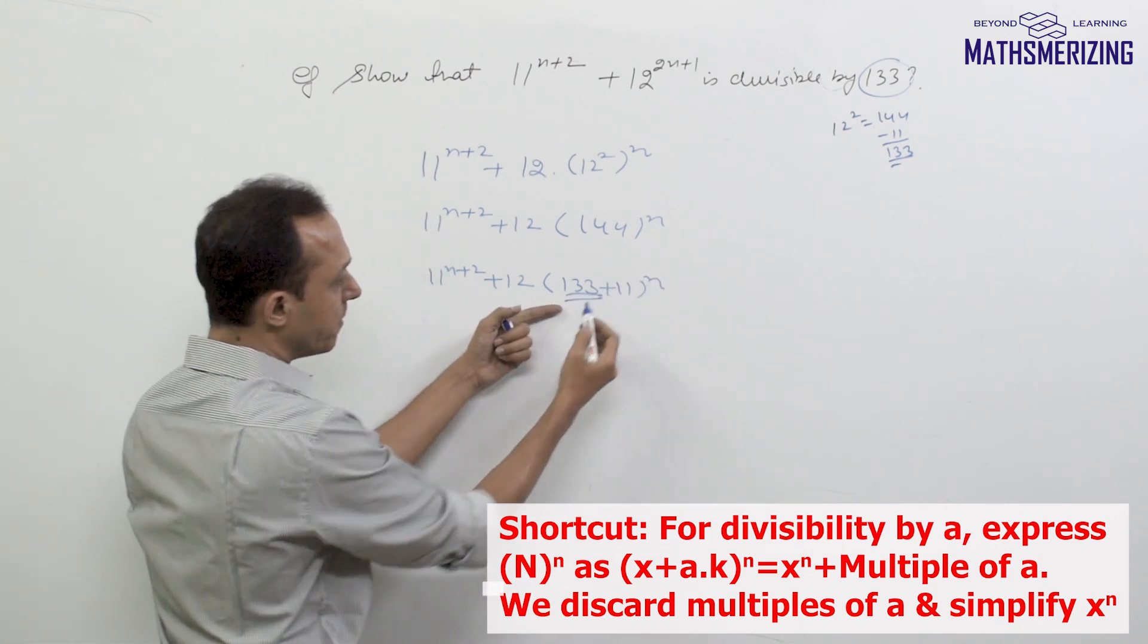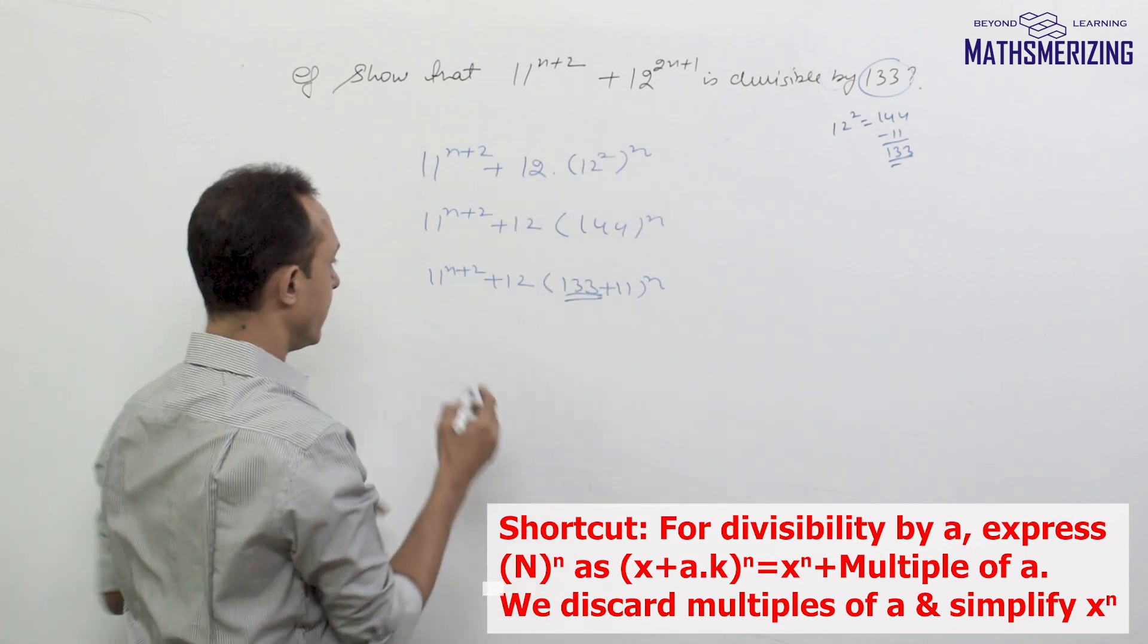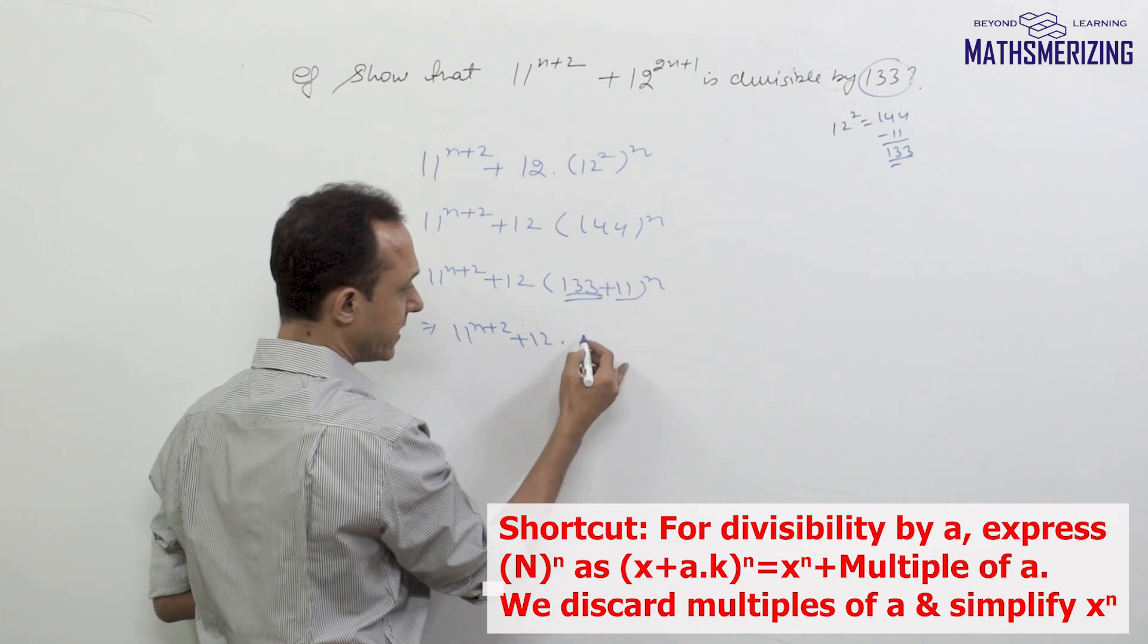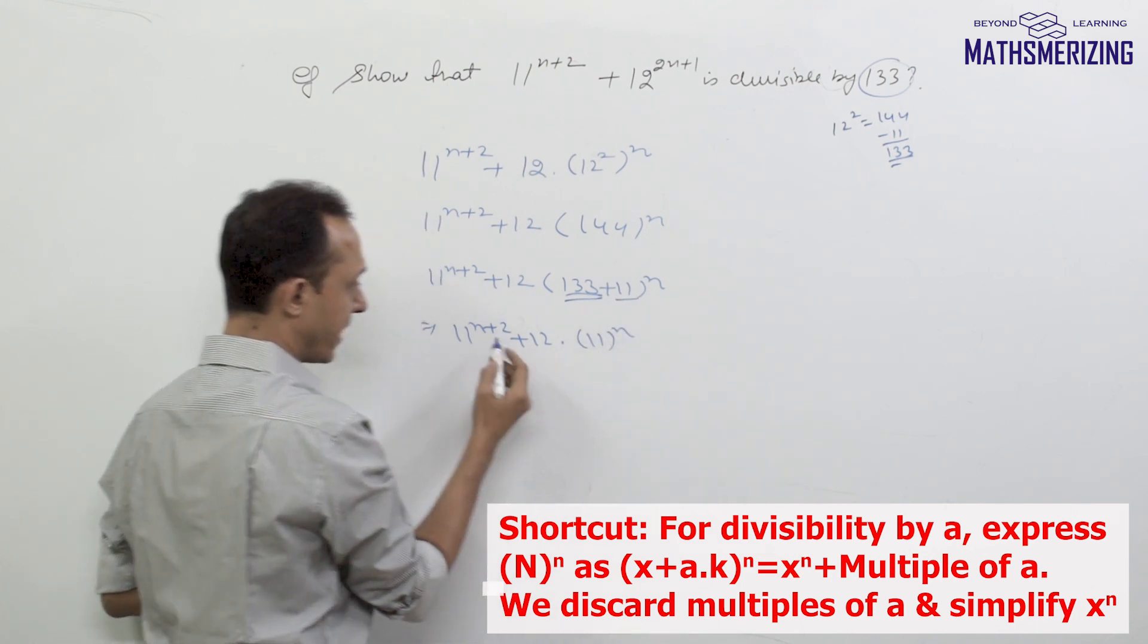Now because we are looking for divisibility by 133, I'll discard multiples of 133. Our shortcut says that (133 + 11)^n simplifies to 11^n when checking divisibility by 133.